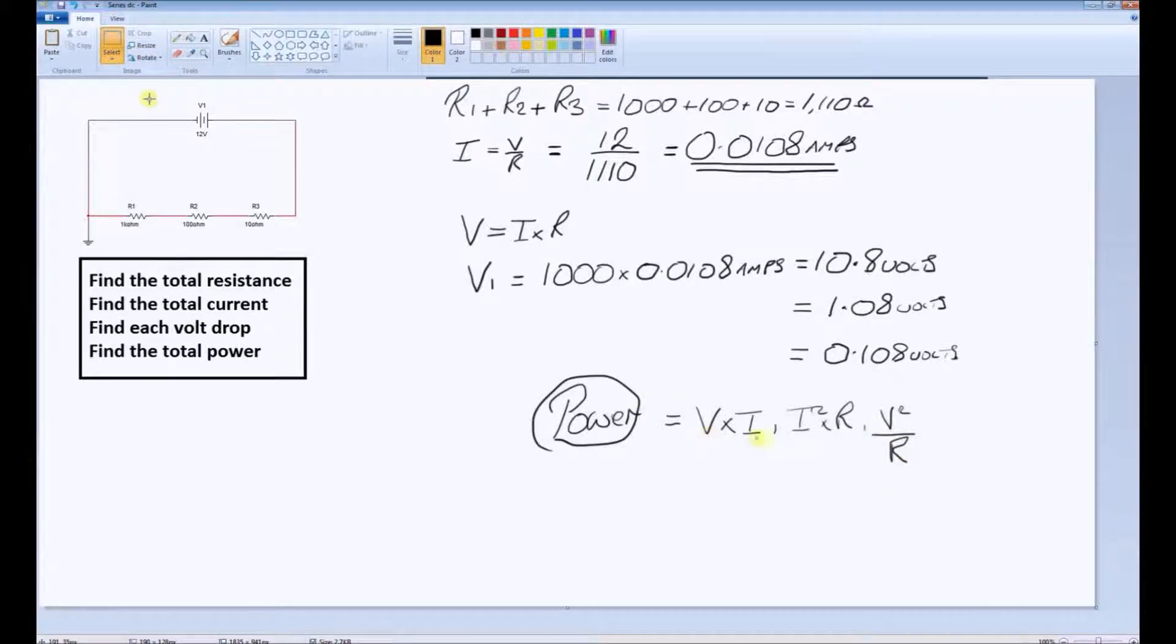Because we know both the voltage and the current, it's very easy to do the first one, which gives 12 times 0.0108. We do that on the calculator.